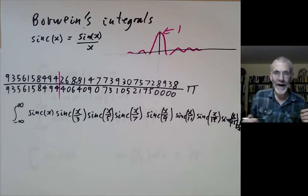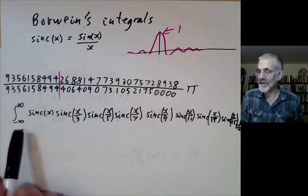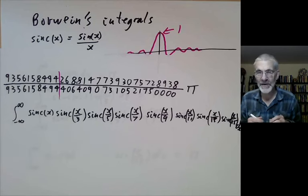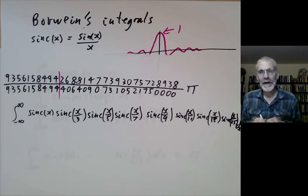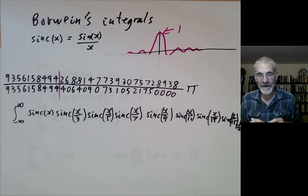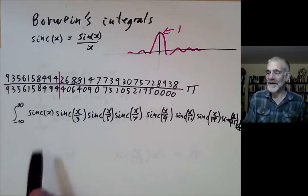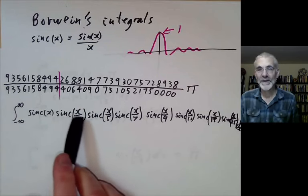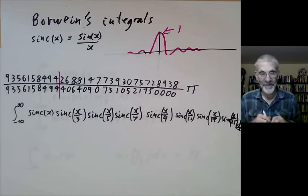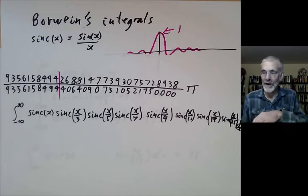John Borwein apparently sent this in as a bug report to the computer algebra system he had been using to evaluate these integrals. There are actually two slightly different versions of this story. One says that he honestly thought it was a bug and was just being helpful in reporting it. The second version is that he knew perfectly well this wasn't a bug and was sending it in as a sort of practical joke on the vendors of the computer software. The second version is more likely because Borwein was a smart guy and probably knew perfectly well what was going on.